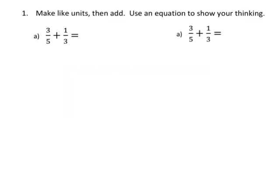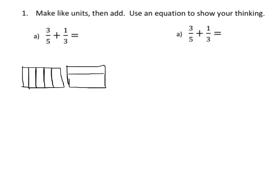So let's solve this problem, and we're going to solve it twice. First, we're going to solve it using the rectangles, and then we're going to solve it using our numerical method. So 3 fifths is going to look like this, and 1 third. We're going to draw in our fifths — 3 fifths and 1 third — and then we're going to cut the fifths into thirds and the thirds into fifths.